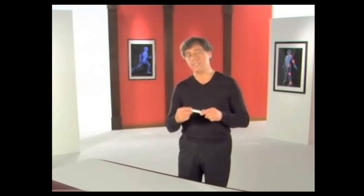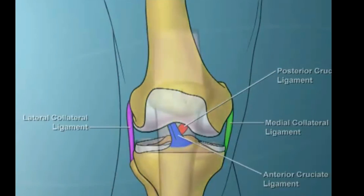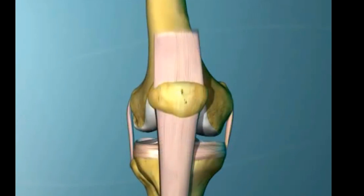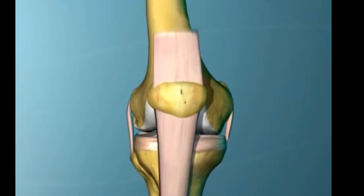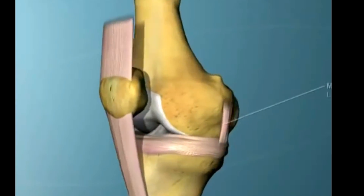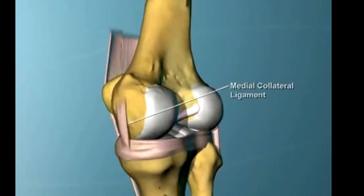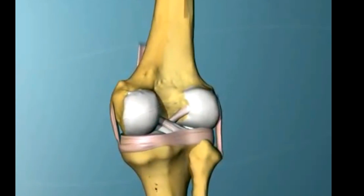ACL tears, anterior cruciate ligament tears, can occur by themselves — we call these isolated tears — but frequently they can occur with some other injuries, such as injuries of the MCL, the LCL, or the meniscus.